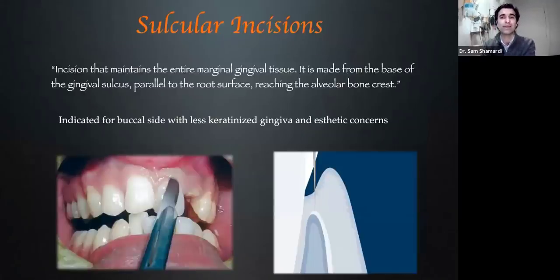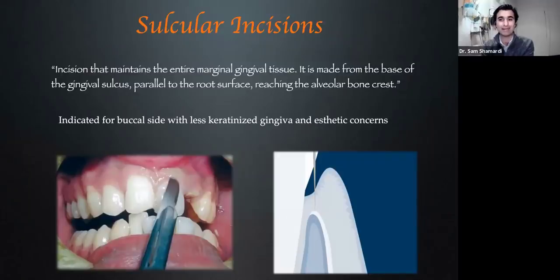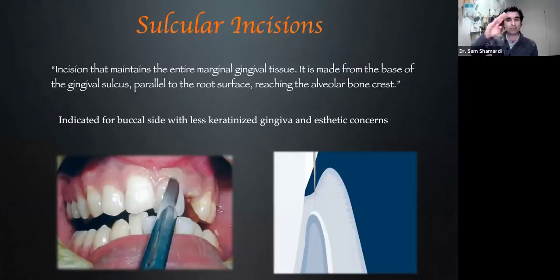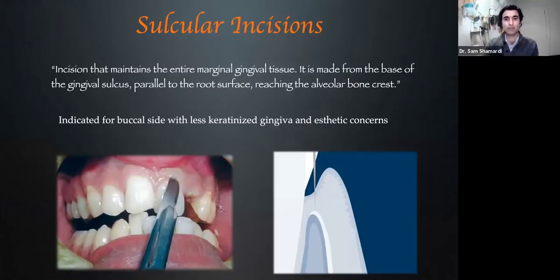A sulcular incision by definition is an incision that maintains the entire marginal gingival tissue. It is made from the base of the sulcus, parallel to the root surface, and most importantly, reaching the alveolar bone crest. As you can see in the picture, the blade is coming through the sulcus and ending at the osseous crest — so it is critical that the blade goes all the way down to the bone crest. It's called sulcular because you are literally following the actual form of the gingival sulcus itself, going around that tooth and the adjacent teeth.